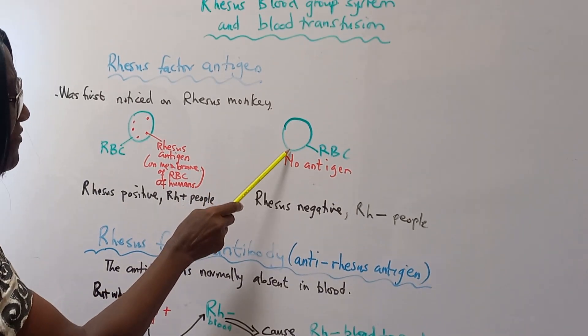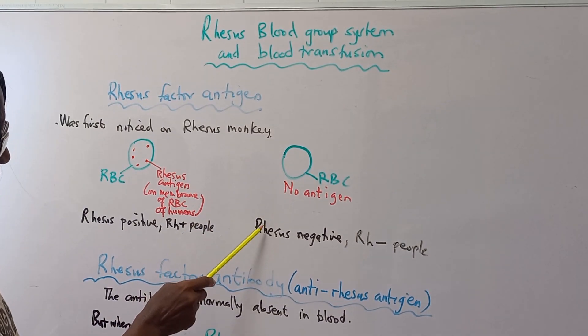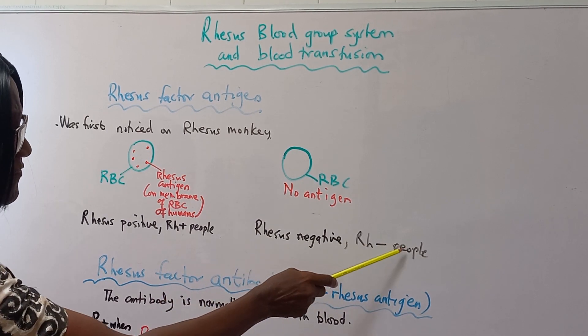Red blood cells that do not have the antigen makes the people Rhesus negative people.